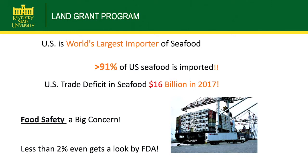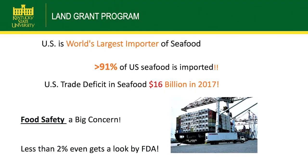So what's our situation here in the United States? The U.S. is the world's largest importer of seafood — the largest consumer but also the largest importer. Over 90% of the seafood we use in the United States is imported. In 2017, that contributed $16 billion to our trade deficit. We do produce and export a certain amount, but we consume and import much more, and that difference — the trade deficit — was over $16 billion.